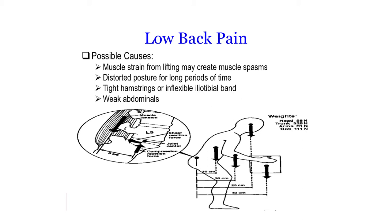Most of the time, distorted posture goes hand in hand with weak abdominals, because weakness in that anterior postural musculature is going to contribute to distortion of posture and the inability to tap into that posterior chain and improve our posture overall, especially over long periods of time.